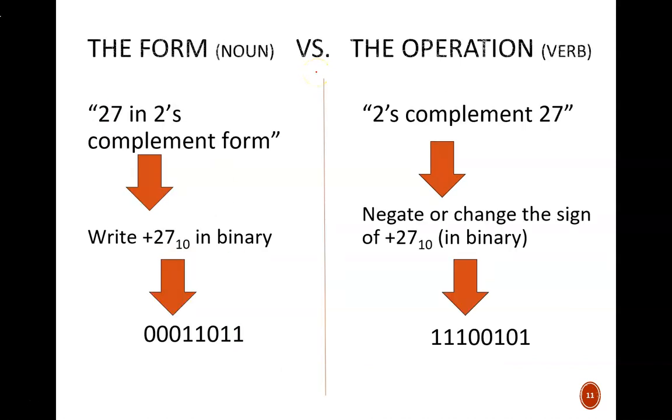On that previous slide, I said 2's complement in two different senses. One time, I said 2's complement form. The other time, I said apply the 2's complement operation. It is important to distinguish between these. The form or the noun states the interpretation scheme. A number in this form could be either positive or negative. The operation or the verb is a command to negate a given number. So, if I ask for 27 in 2's complement form, that means we should write positive 27 in this signed binary form. But, if I asked to 2's complement 27, that means we should apply the 2's complement operation and negate positive 27 into negative 27.